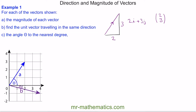The magnitude of vector A — we write the magnitude in vertical brackets — will be the square root of 2 squared plus 3 squared, which is the square root of 4 plus 9, so root 13. This is our magnitude of the vector.